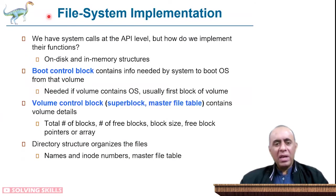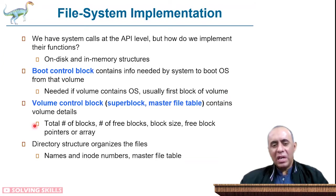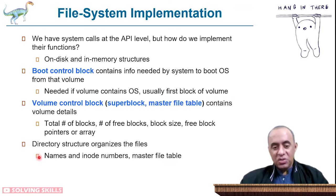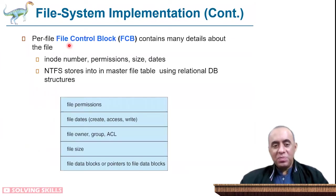We have system calls at the API level, but how do we implement their functions in disk and in-memory structures? First, there is a boot control block, which contains information needed by the system to boot the operating system from that volume — it is needed if the volume contains an operating system, and is usually the first block of the volume. Then there is a volume control block, also called the superblock or master file table, which contains volume details like the total number of blocks and the number of free blocks. The directory structure organizes files using names and their IDs, called inode numbers and master file tables.